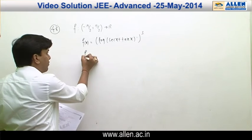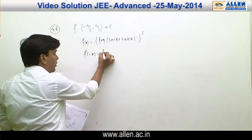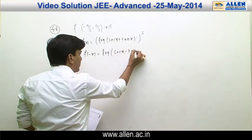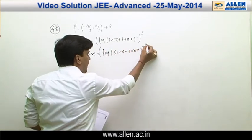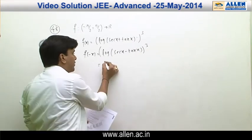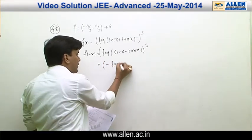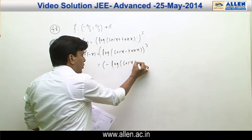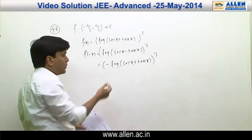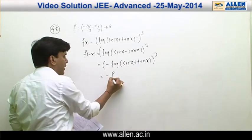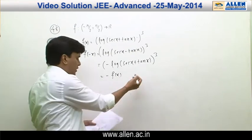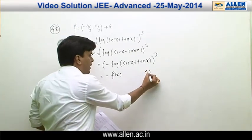We calculate f(−x), which equals [log(sec x − tan x)]³. Since sec x − tan x = 1/(sec x + tan x), we can write this as −[log(sec x + tan x)]³, which equals −f(x). So f(−x) = −f(x), hence the function is odd and option A is correct.